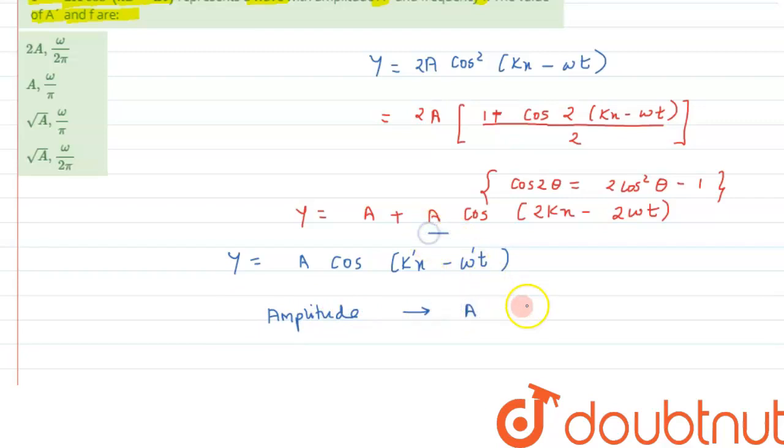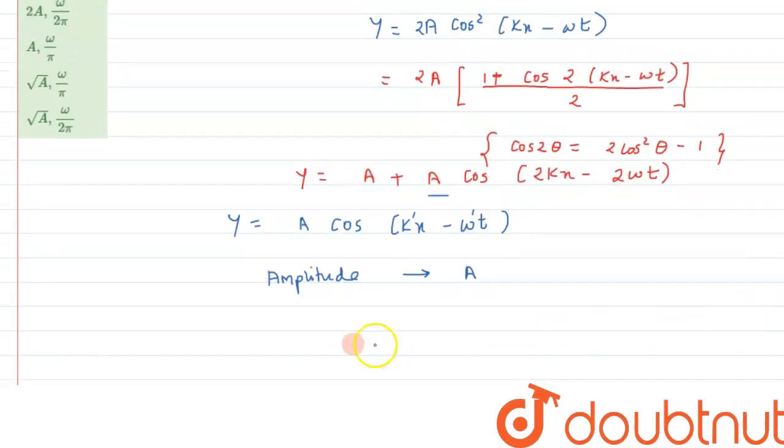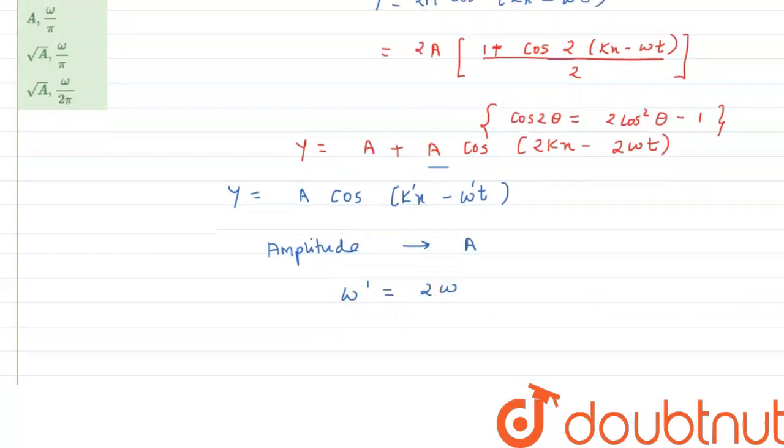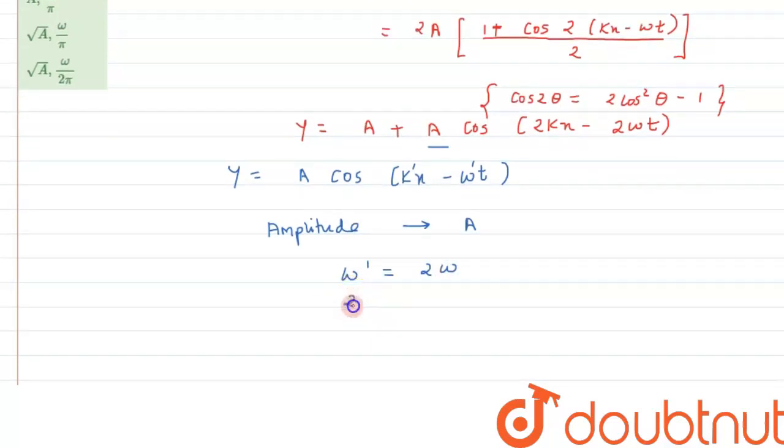As we can see the amplitude value is a and omega dash we are getting it as omega, so from here we can say omega dash can be written as 2 pi f dash and that is equal to 2 into 2 pi f.